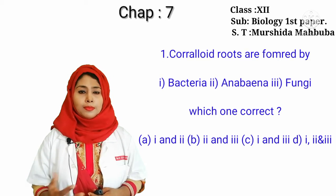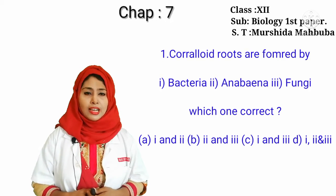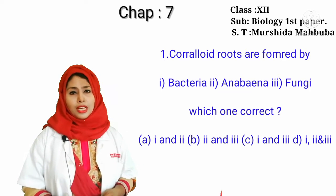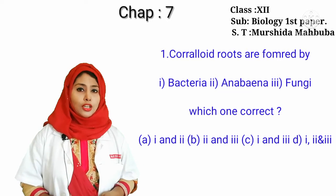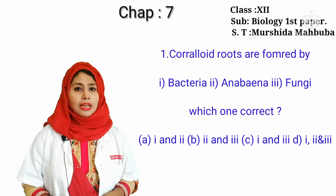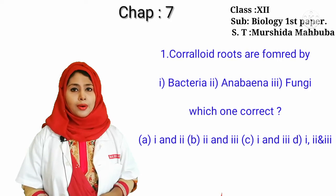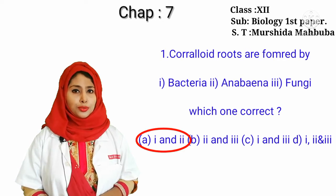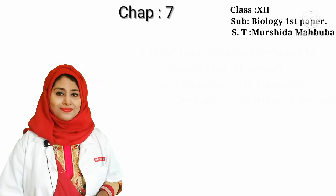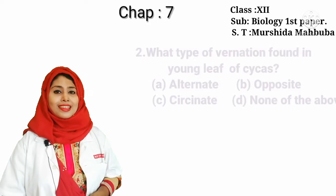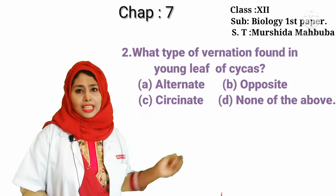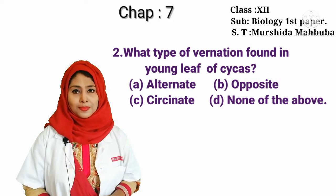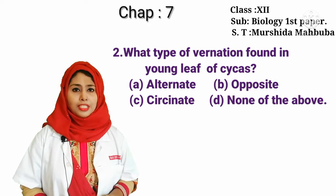Our first question is: coralloid roots are formed by bacteria, Anabaena, or fungi — which one is correct? Coralloid roots are formed by Nostoc and Anabaena bacteria, so the correct answer is 1 and 2, option A.